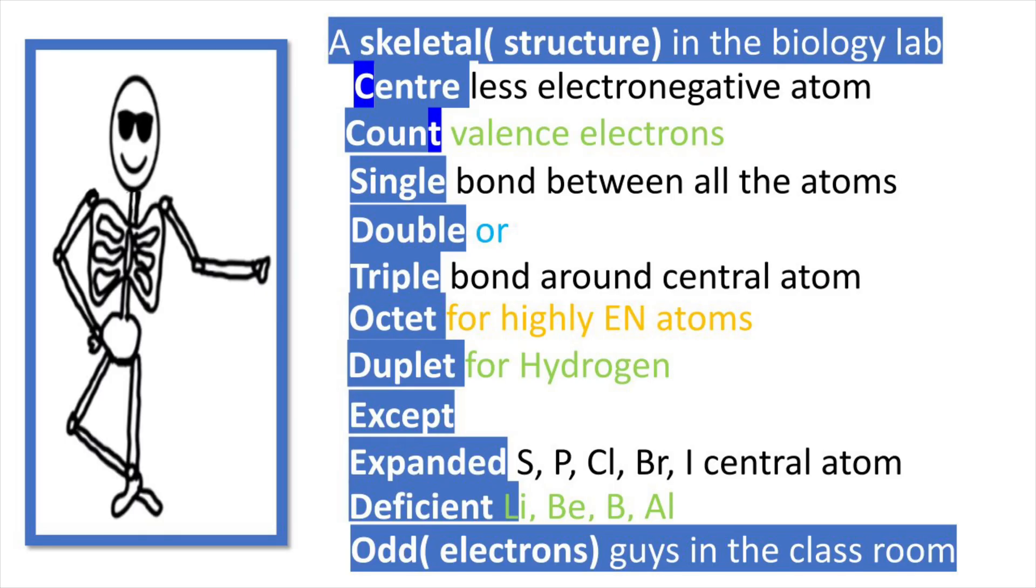To write Lewis dot structure, let us see a beautiful mnemonic: A skeletal in the biology lab, center, count, single, double, triple, octet, duplet, except expanded, deficient, odd, guys in the classroom.